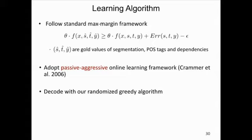For learning, we use the standard maximum margin framework. We search for parameter values that score the gold assignment higher than other assignments by a non-trivial margin, defined as the number of errors in segmentation, POS tags, and dependencies compared against gold values. We use the passive-aggressive online learning framework, where the main challenge is finding the optimal solution for each sentence in every iteration — we use the same randomized greedy algorithm to solve this.